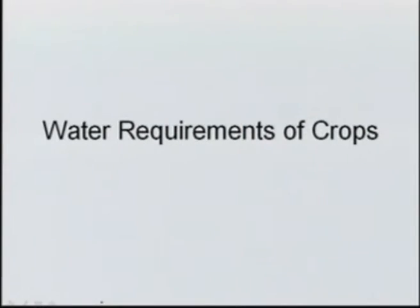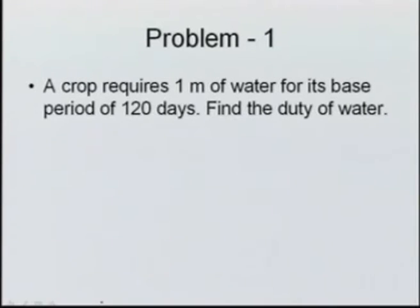We have already discussed the theories in water requirements of crops, including base period, delta, duty, different efficiencies in the irrigation system, and soil moisture relationships. Now we will solve some numerical problems to make things clearer. The first problem: a crop requires 1 meter of water for its base period of 120 days. Find the duty of water.